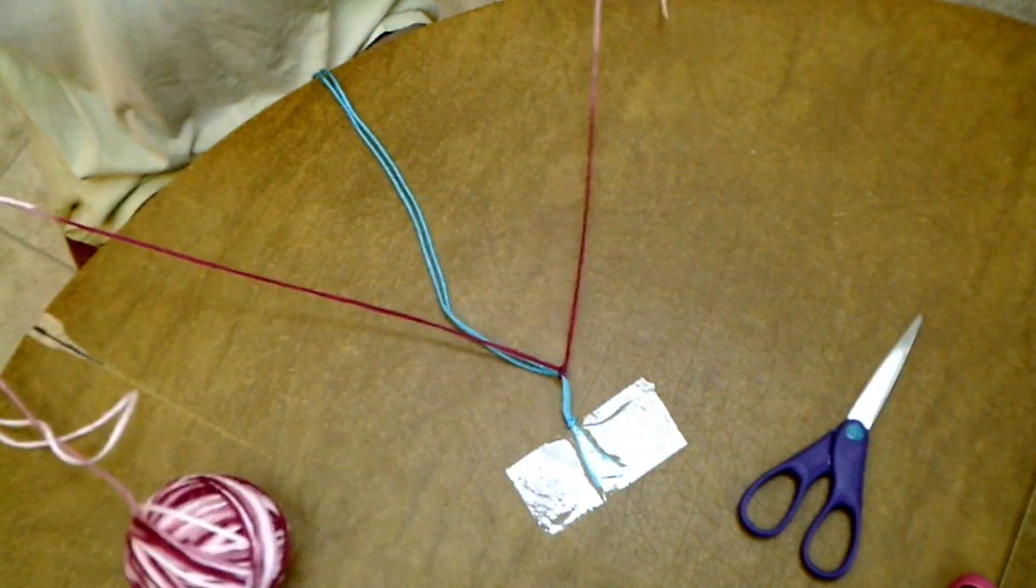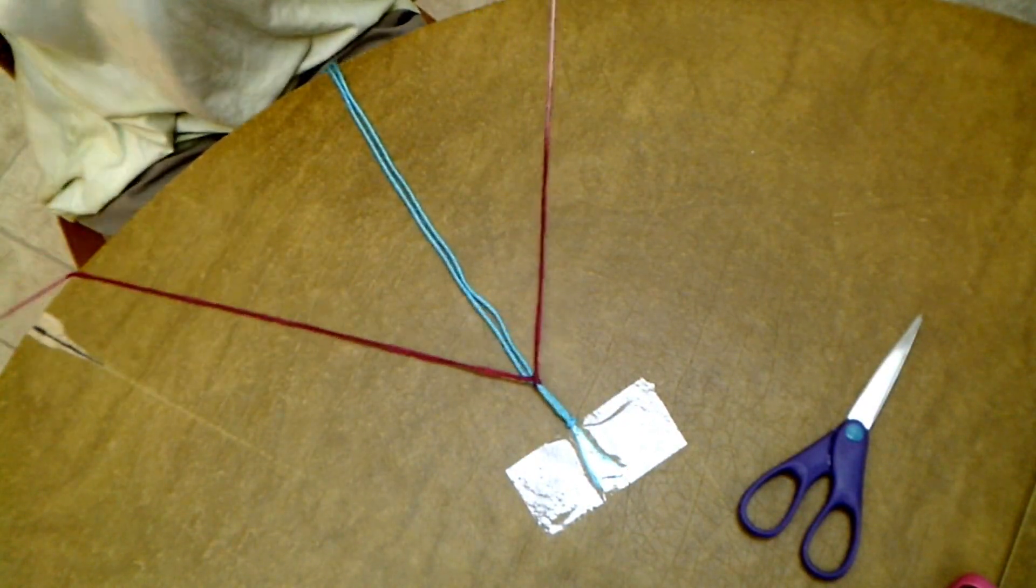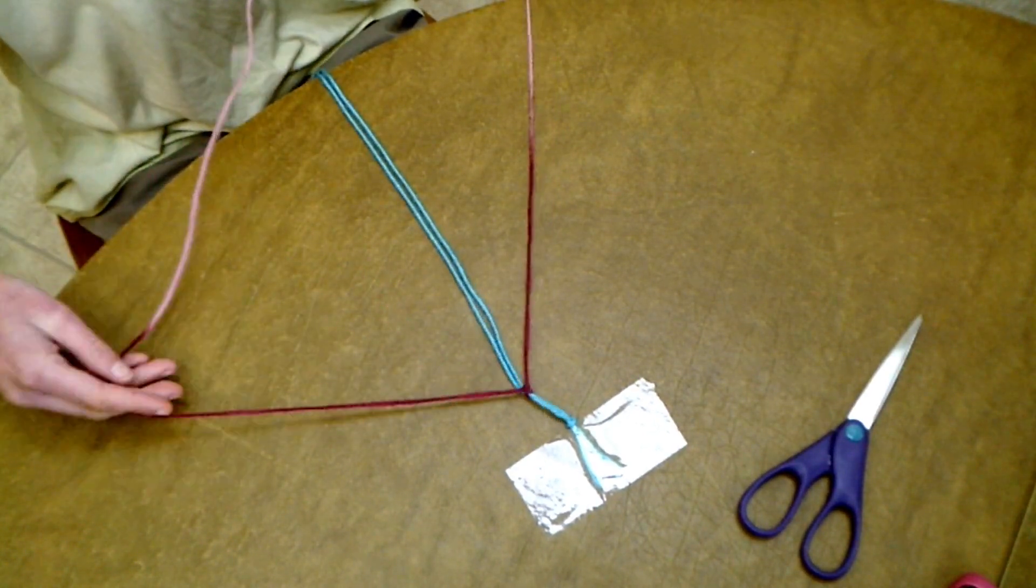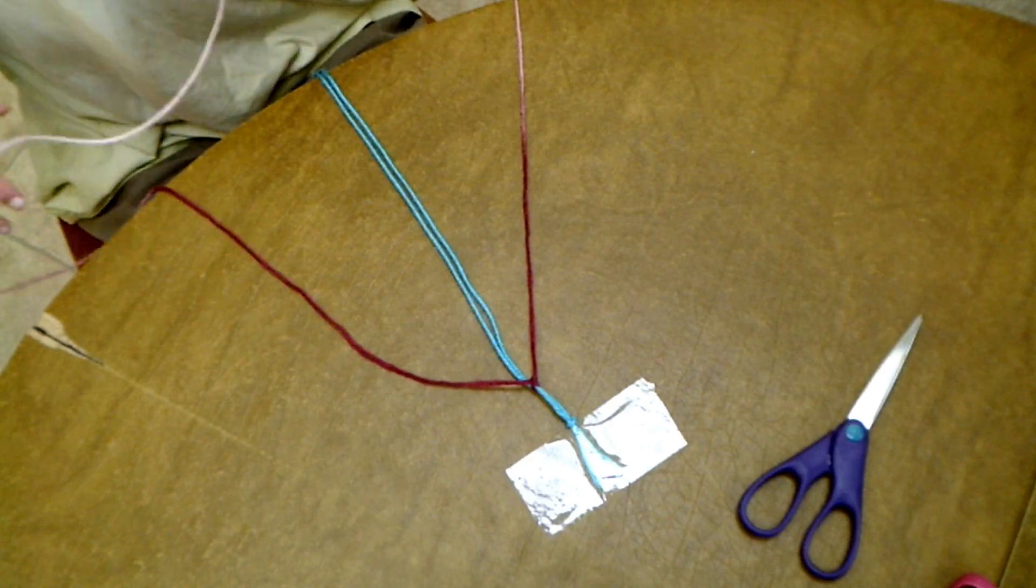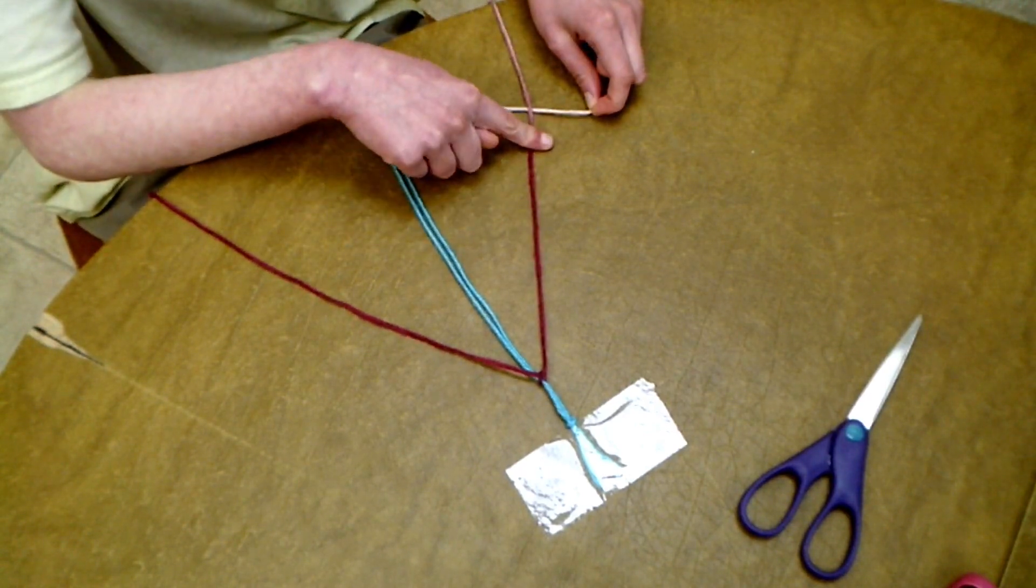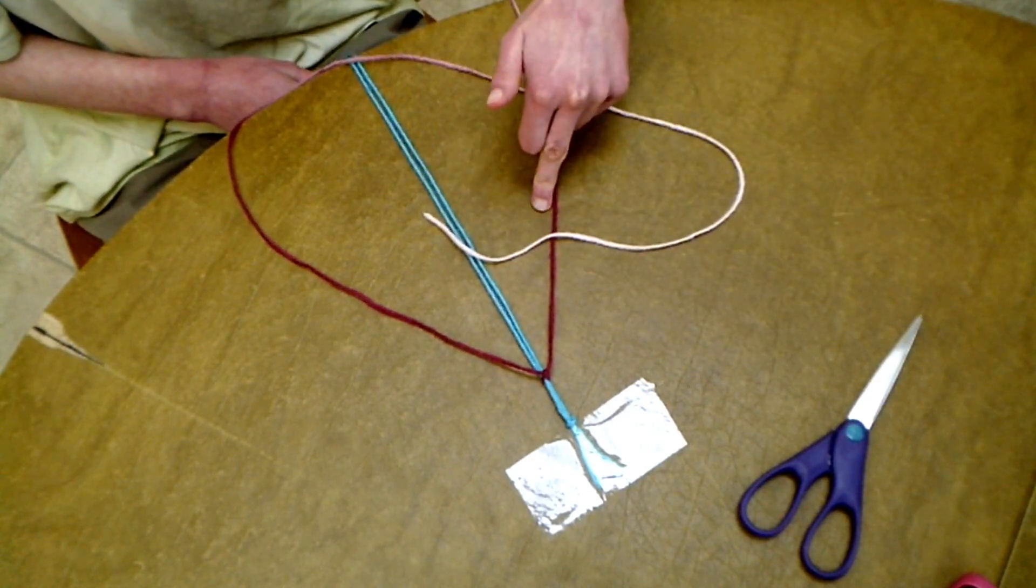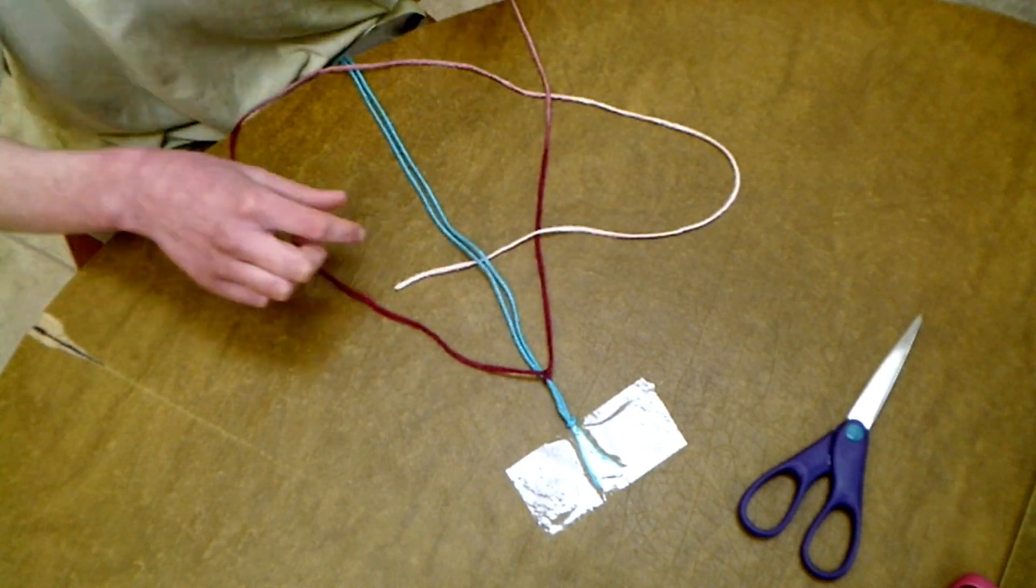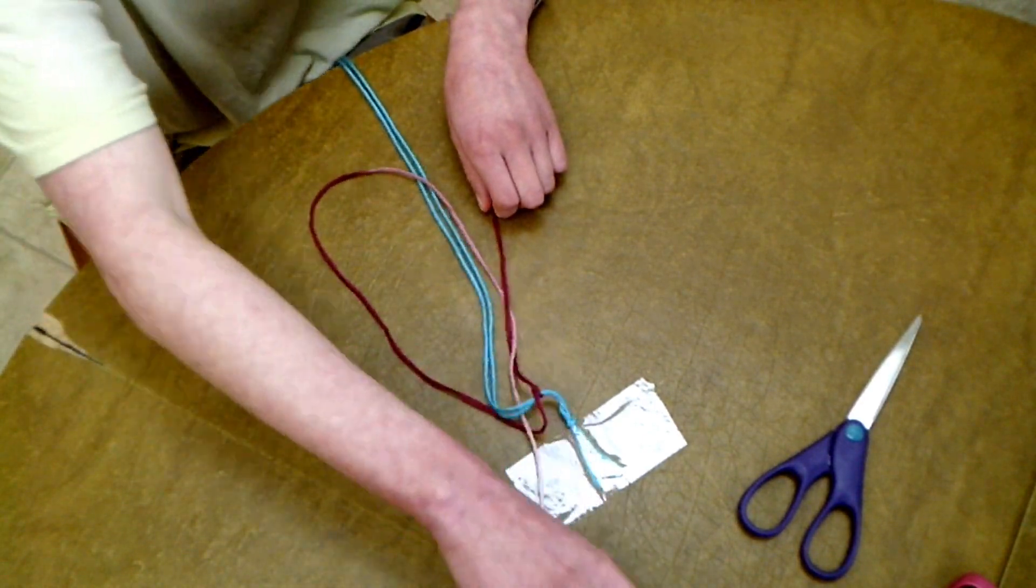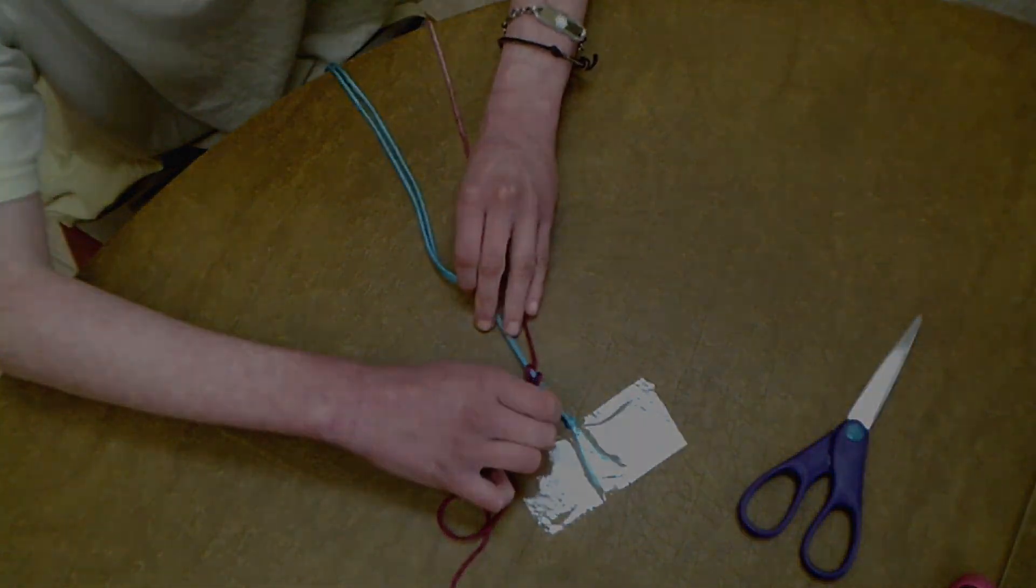Now, we lay the strings out like this. We have our blue string in the middle. We take the right side, and we go over the center, under the left string. Then we go around, over the left string, under the center, and back over the right string. And pull it, and gently pull it up, and pull it tight. Just like that.